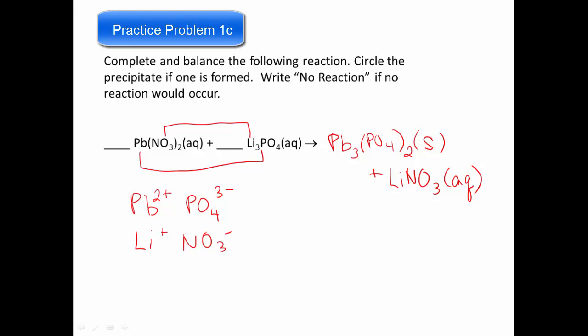The last thing we need to do before we finish up this equation is we need to balance it. So I'm going to balance my leads first. I need three of them here. And then I'm going to need two phosphates here. And that means that I'm going to need six lithiums over here. And that's going to balance me out. So this is the end of this video. And there is another video that you need to watch in this series before class. So I will see you in the next video.